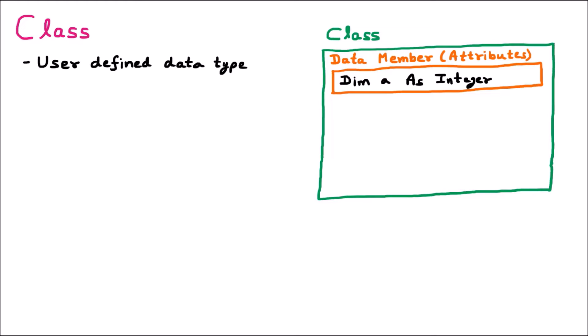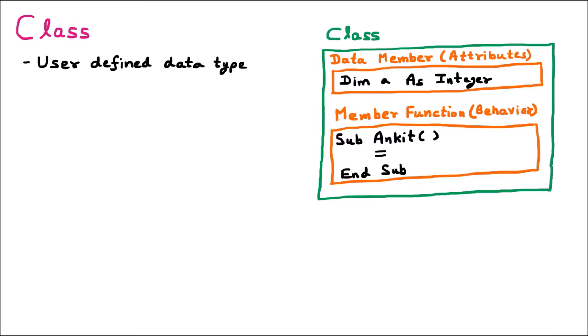Class also contains the member function. So many times to make a program, we need some functions or procedures. For example, suppose 'Ankit' is a procedure. In C programming we use void with brackets to define a procedure, but here in .NET we use Sub. This Sub ends with End Sub. So this is how we define any procedure or function inside the class, and that is called the member function or the behavior.